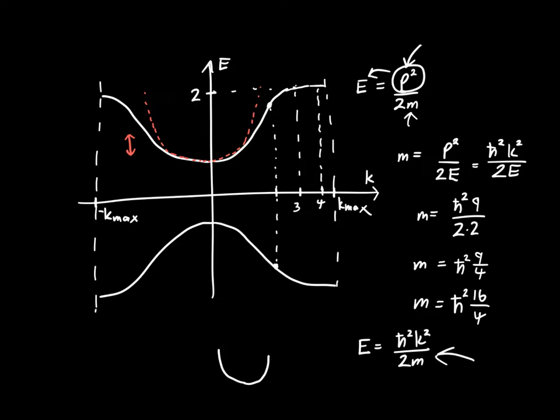The value in this approach is it lets us calculate the effective mass of the electron in both the conduction band and the valence band. In the conduction band, the parabola is facing one direction, so the mass is going to have a positive value.